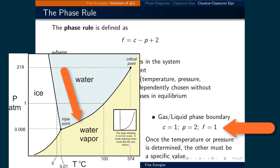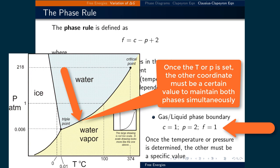Looking specifically at a phase boundary, if our water sample is at the liquid-vapor phase boundary, C is still equal to 1 since there is still only H₂O in the system. However, now there are two phases present — the liquid and the vapor — so P equals 2. This means F equals 1 minus 2 plus 2, which gives 1, meaning that once the temperature or the pressure is set, the other value must be a specific value in order for the system to remain on the phase boundary.